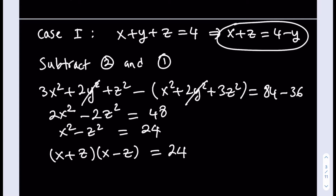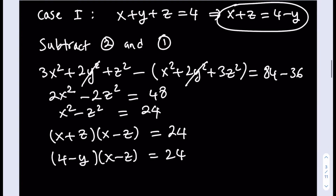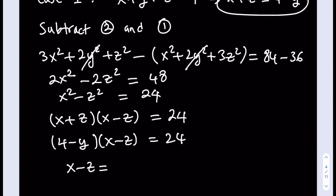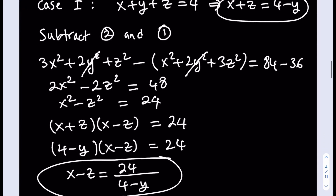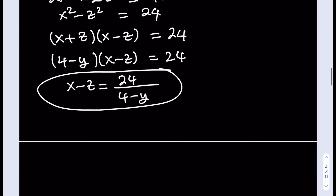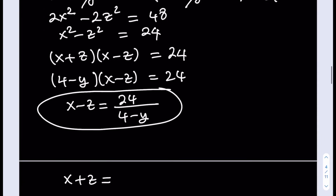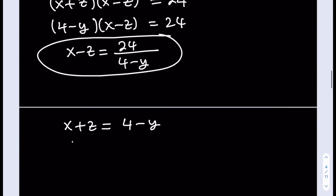We know that x plus z equals 4 minus y, so let's replace that in the factored form. From here we can solve for x minus z by division — it equals 24 divided by 4 minus y. So I now have a system of equations for x and z, where y is treated as a constant: x plus z equals 4 minus y, and x minus z equals 24 divided by 4 minus y.